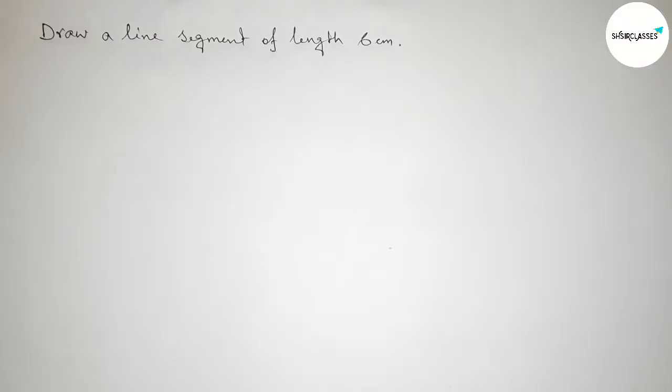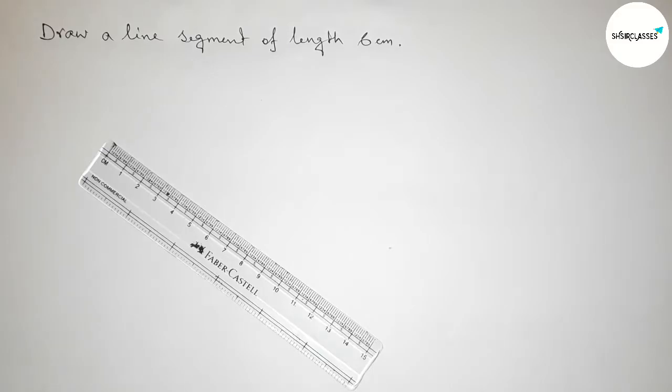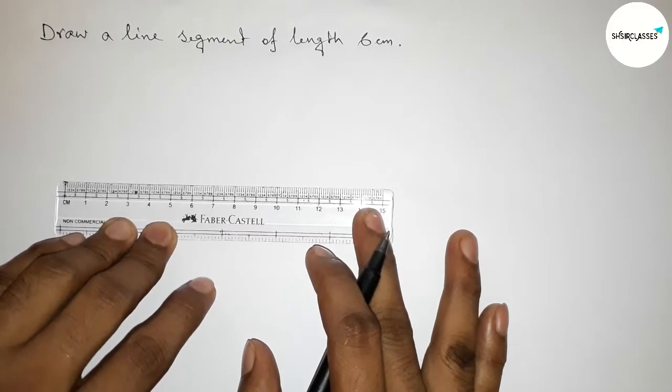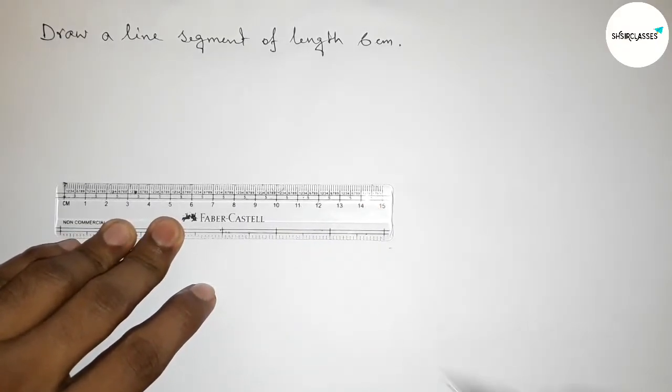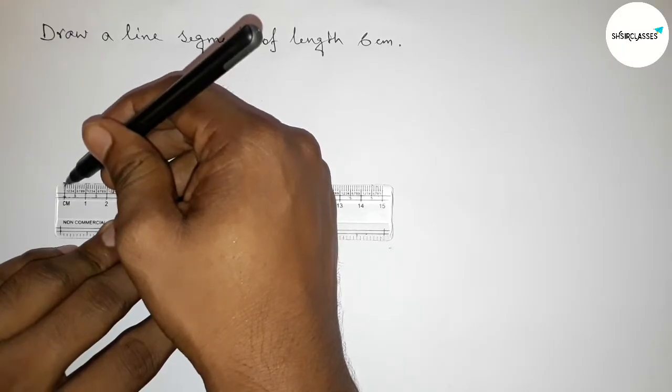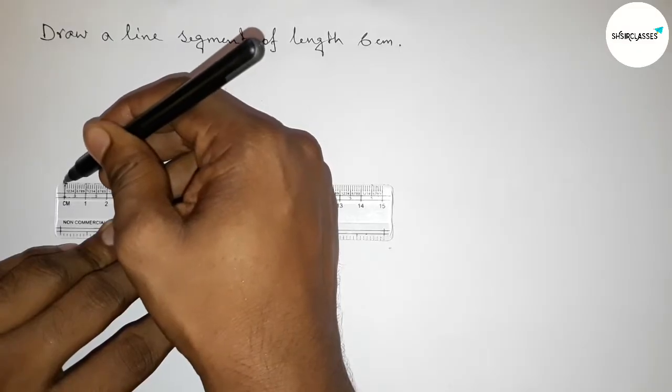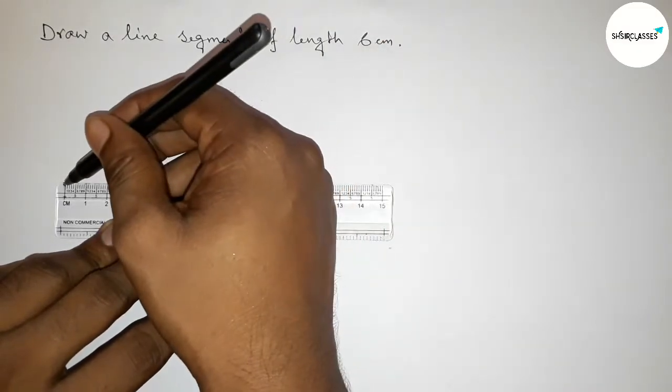So let's start the video. First of all with the help of scale, first we have to put the scale here and first counting here the starting 0. So this is starting 0, so marking 0.